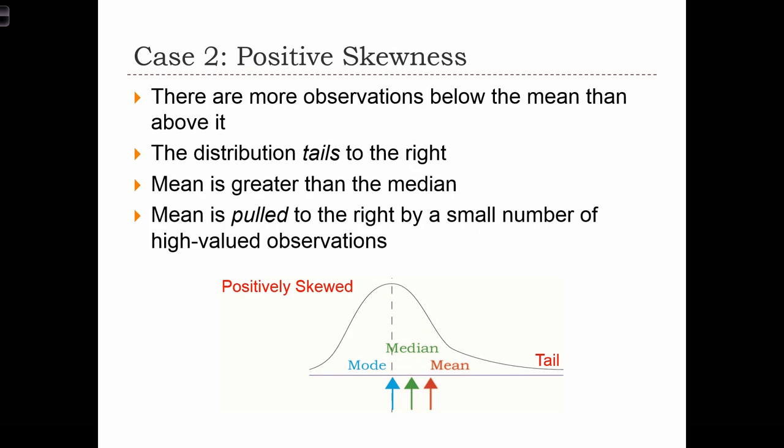The second case for skewness is when the skewness statistic is positive. In this case, there are more observations below the mean than there are above the mean, but the mean is being pulled to the right by the tail because there are a few high-valued observations on the right-hand side of this distribution.